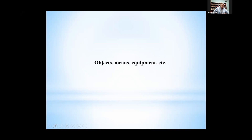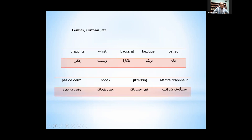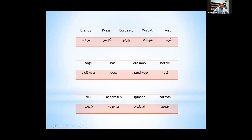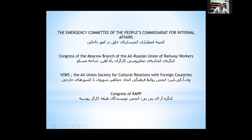Another category was objects, means, instruments, and tools — those which were repeated through the novel. There were also cultural terms as another category, including games and customs, food and drink and related items. Another category was organizations, institutions, and companies' names, which can be very long ones and make the work of the translator difficult.